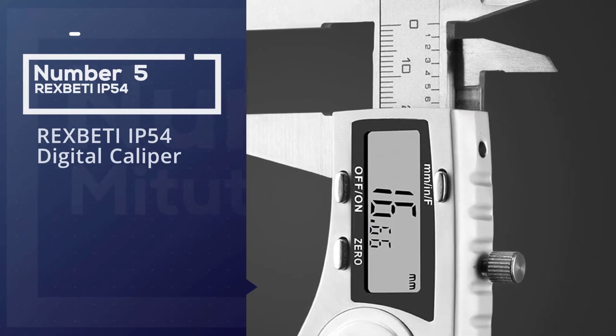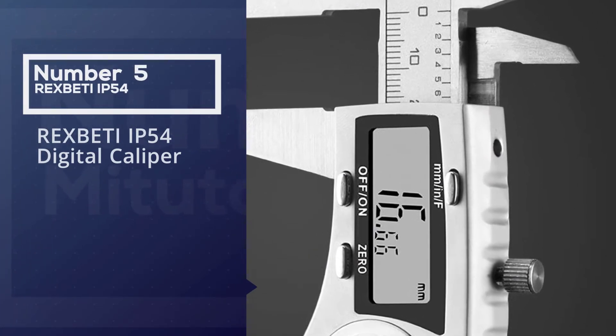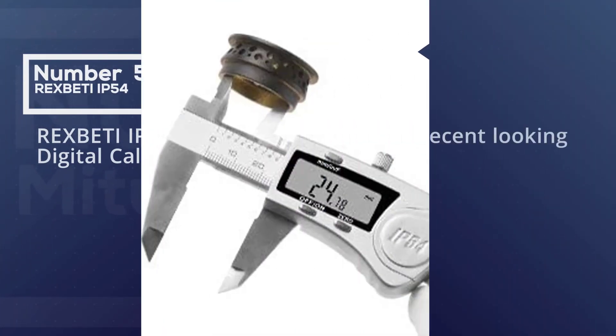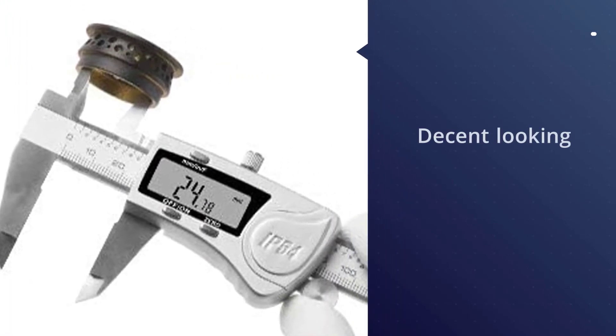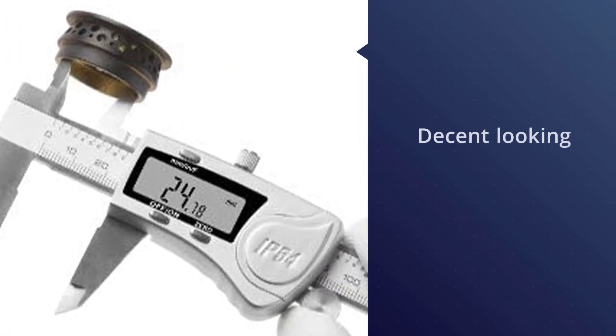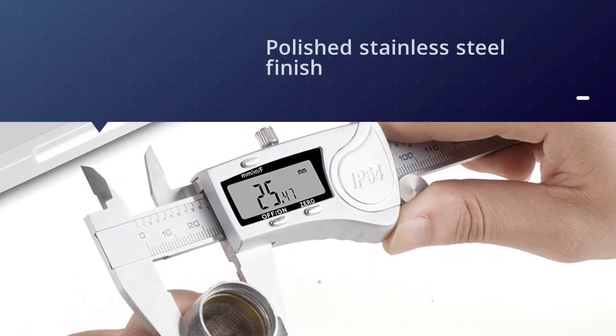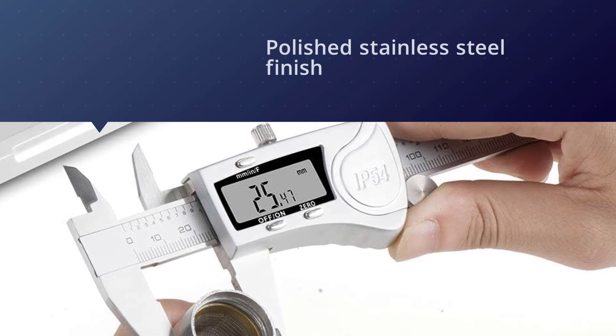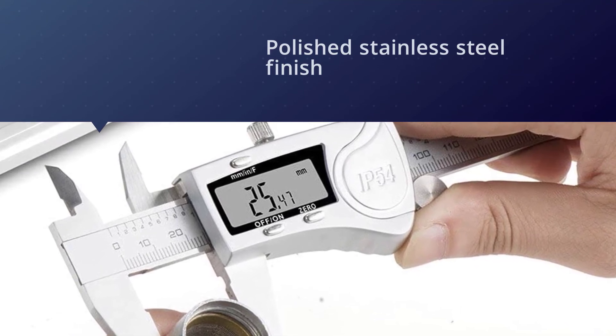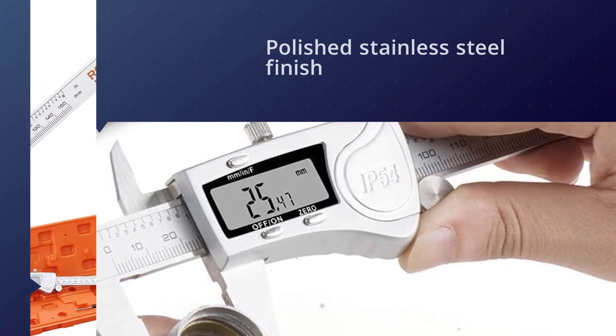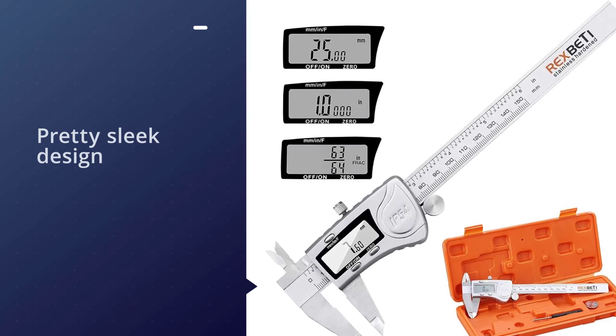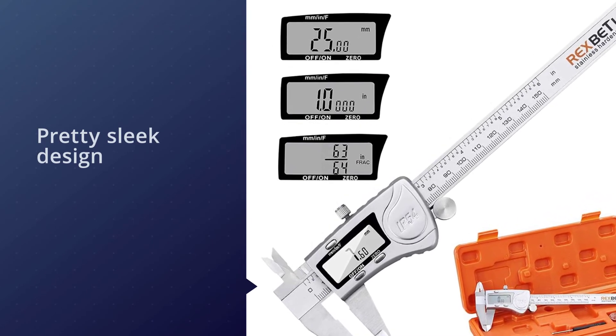Number five: Rexbeti IP54 digital caliper. The Rexbeti has 0.02mm accuracy while measuring objects up to 150 millimeters. It has an IP54 protection rating available that ensures water as well as dust resistance. As it is more focused on general applications, it can be the best choice if you're looking for a home DIY tool.